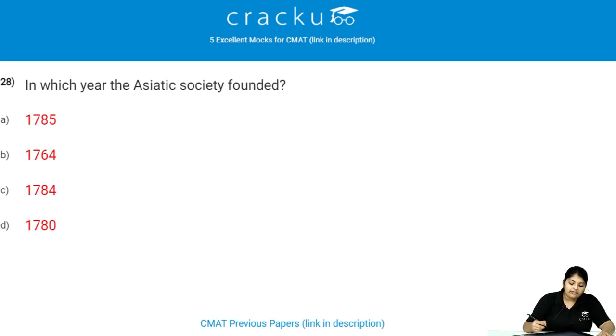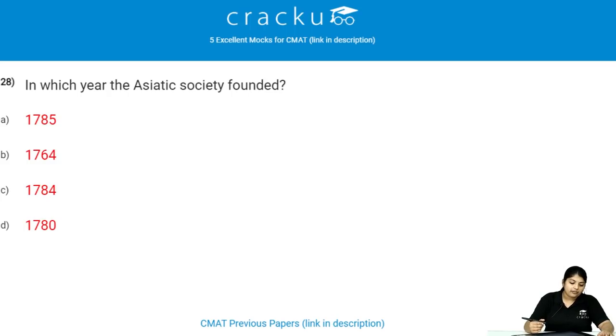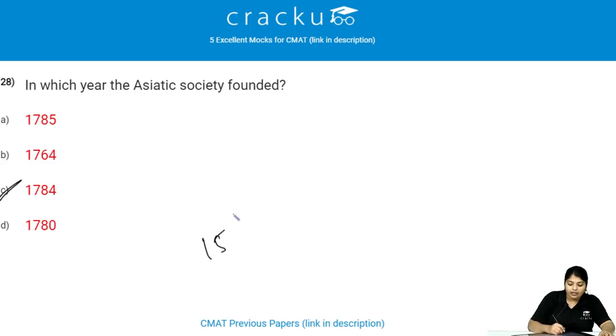In which year was the Asiatic Society founded? The Asiatic Society was founded in the year 1784, on 15th January.